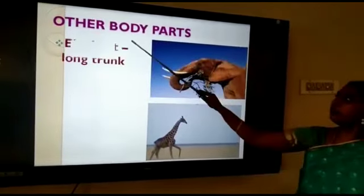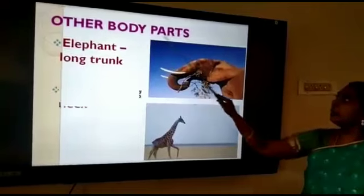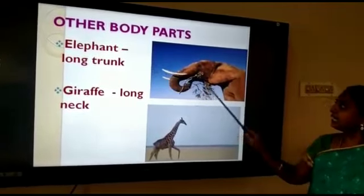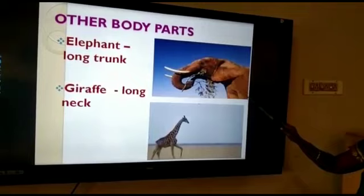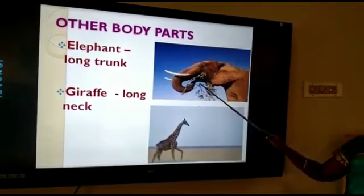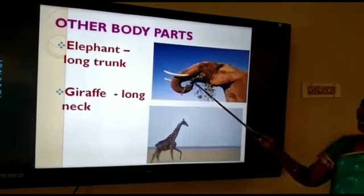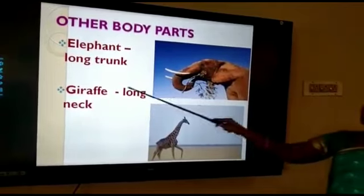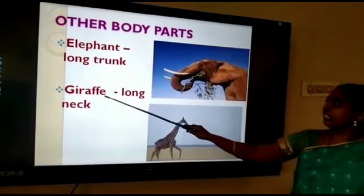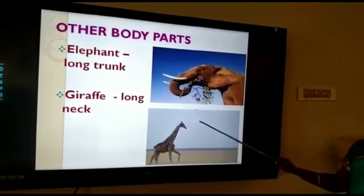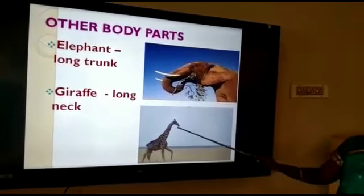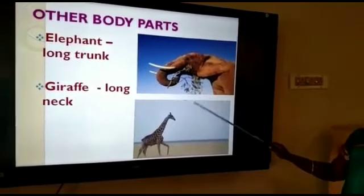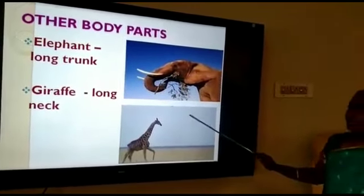Now we are going to see other body parts used for feeding. The elephant has a long trunk which helps it to break branches of trees and put them into its mouth. The giraffe has a long neck which helps it to eat leaves from tall trees.